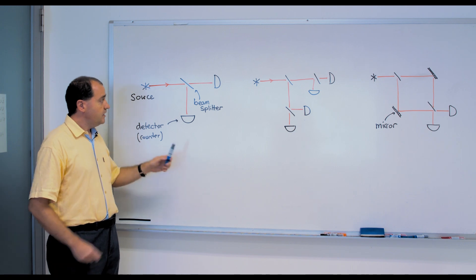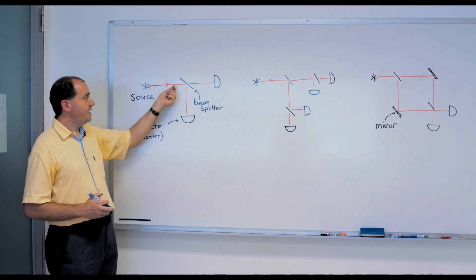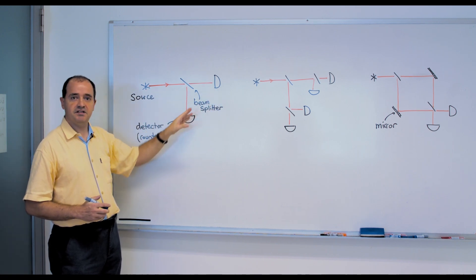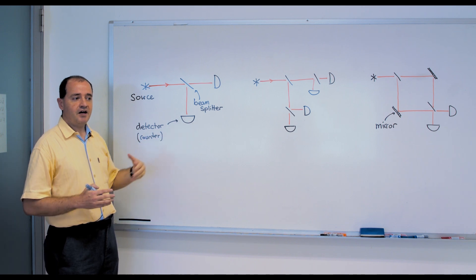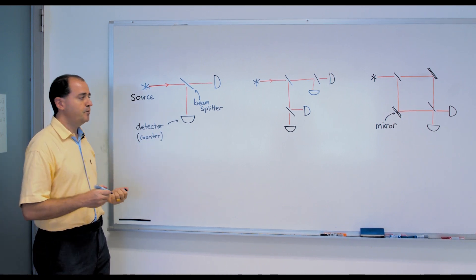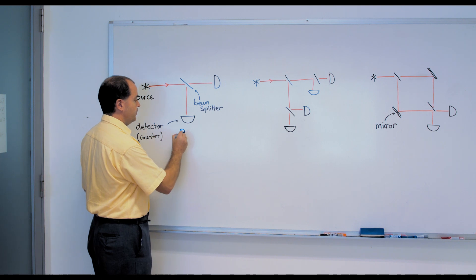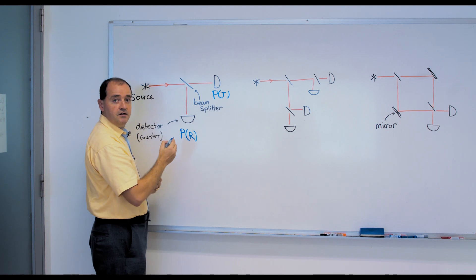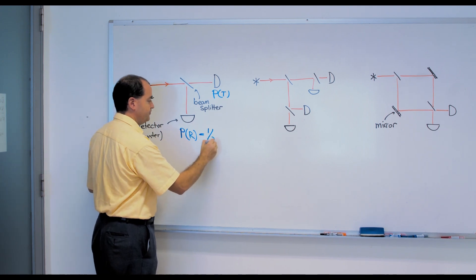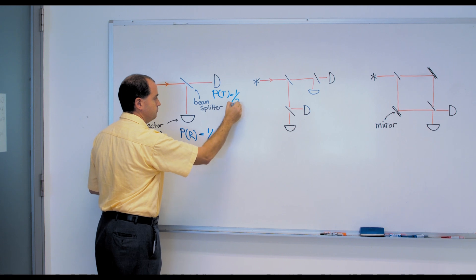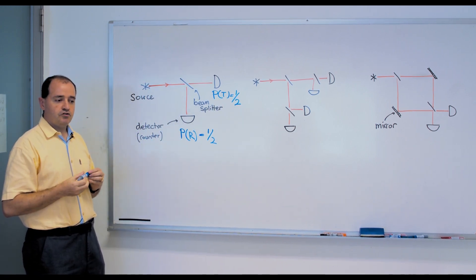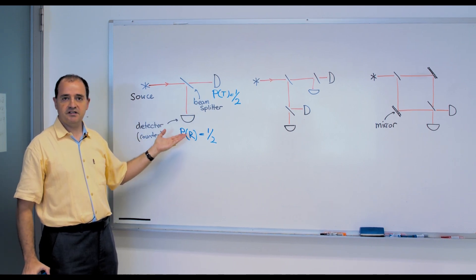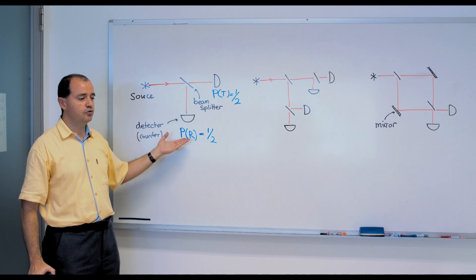If one runs this experiment, sending many particles one after the other and recording the clicks, sometimes they click here, sometimes they click there. After sending many of them, you can reconstruct that the probability of the particle being reflected and the probability of the particle being transmitted are identical — let's say one half. What determines whether the particle is transmitted or reflected? Let's leave this question aside and move to the next experiment.